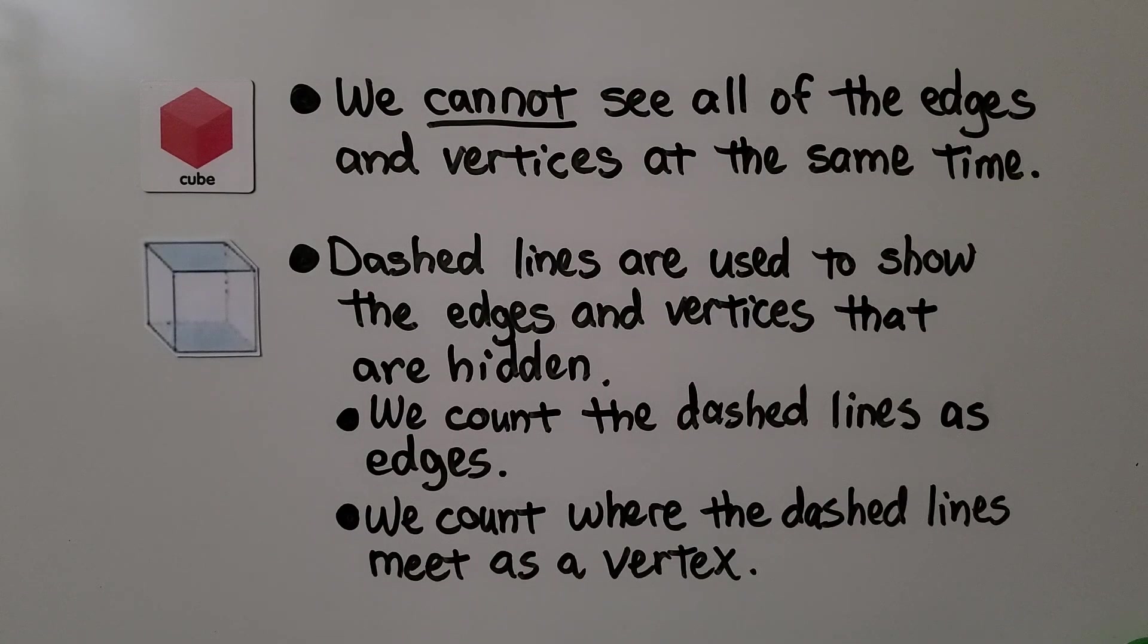We cannot see all of the edges and vertices at the same time. Dashed lines are used to show the edges and vertices that are hidden. We count the dashed lines as edges and we count where the dashed lines meet as a vertex.